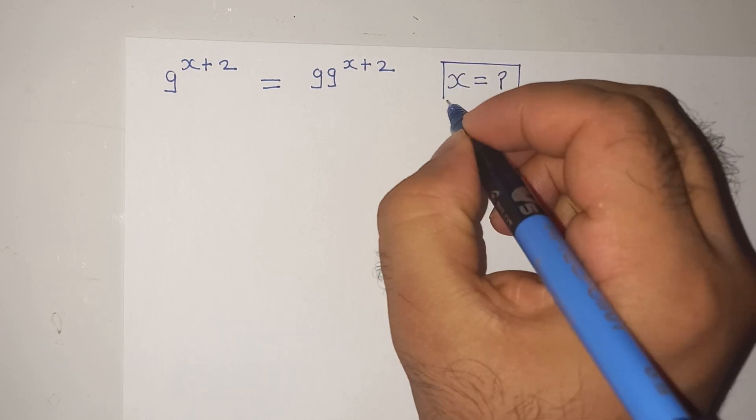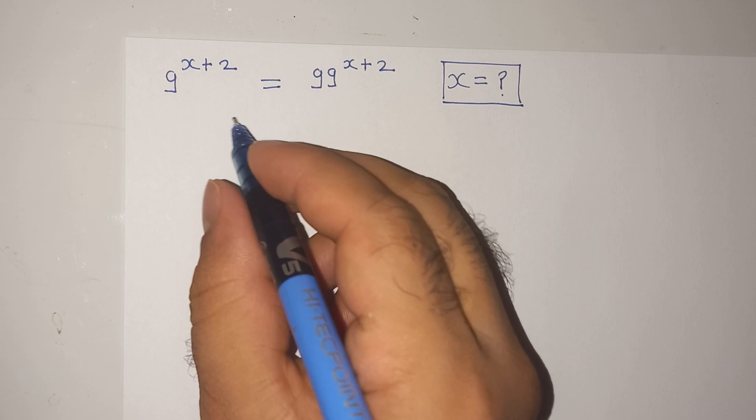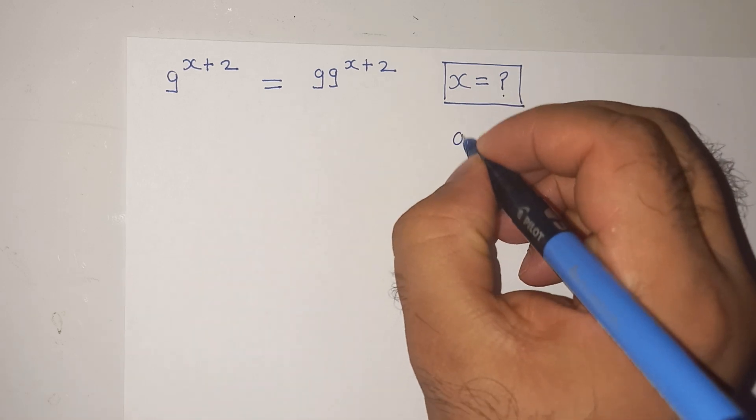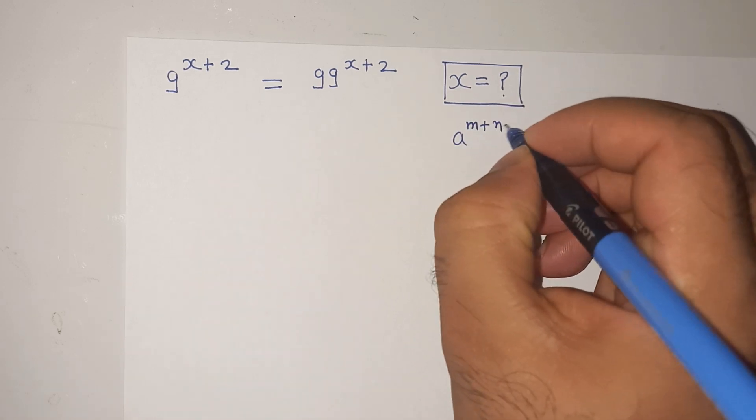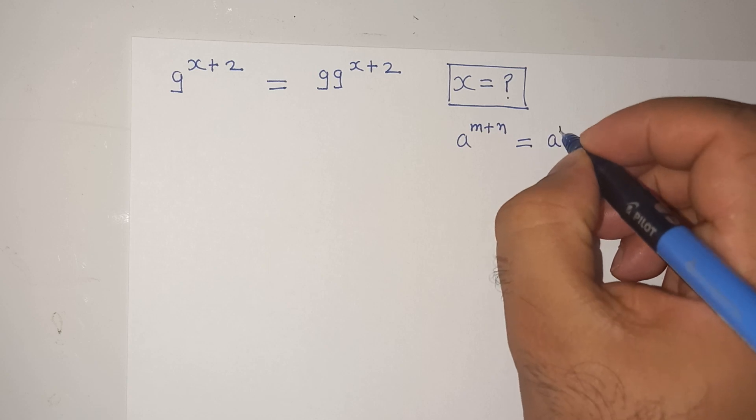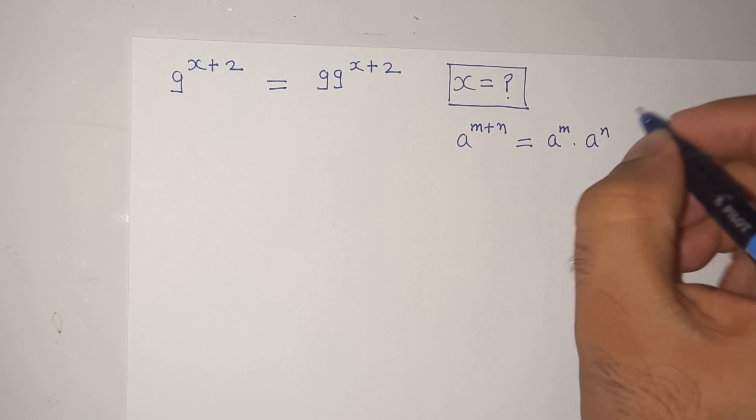So how to solve this question? To solve this question I am going to apply this exponential rule which is a power m plus n equals to a power m multiplied a power n.